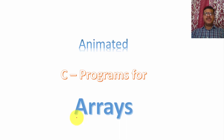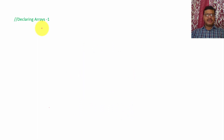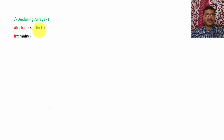Hello everyone, in this video I am going to discuss about arrays in C programming. To declare arrays, different methods are there. The first line of the program is including the header file — here I am including stdio.h. Next, we are writing the entire program inside the main function, declaring the main function with open and closed curly brackets.